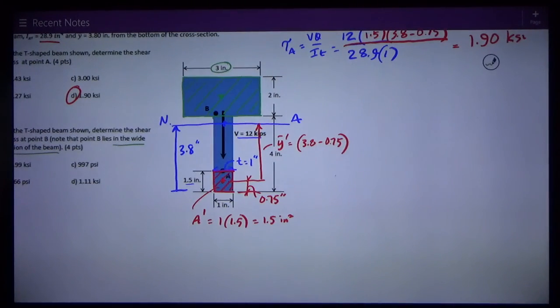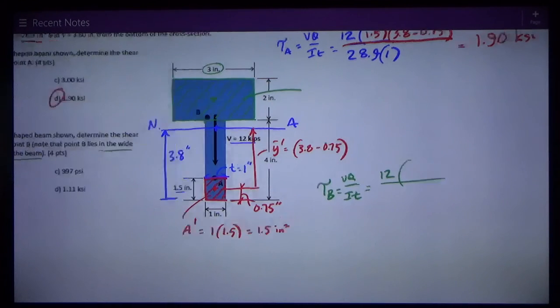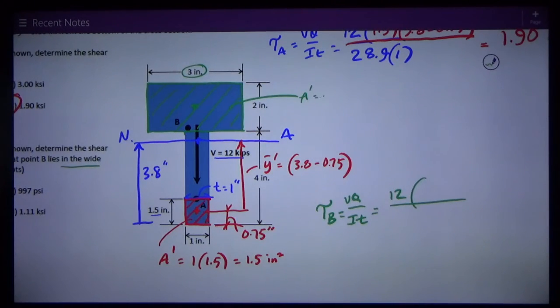So tau at B is equal to VQ over IT, which is 12 kips. Q is A prime, which is the area of this green shaded section that I just drew in, which is 3 times 2, 6 square inches.